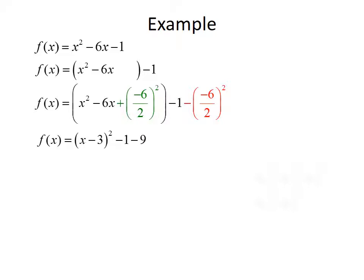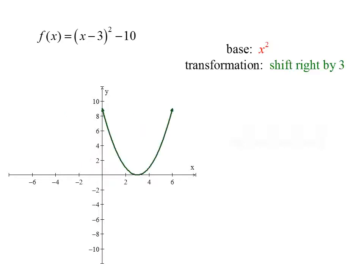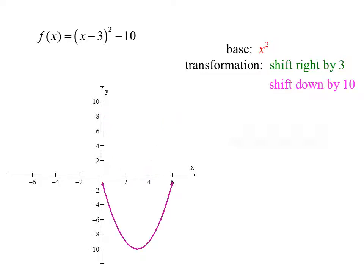Simplifying, the parentheses become a perfect square: x minus 3 quantity squared. Negative 6 over 2 is 3, and 3 squared is 9. So we have minus 1 minus 9 outside the parentheses, which combines to give us x minus 3 squared minus 10. Now that we have the function in standard form, we can graph using transformations. Starting with x squared, the minus 3 inside shifts right by 3, and the minus 10 outside shifts down by 10. The final graph is represented in magenta.